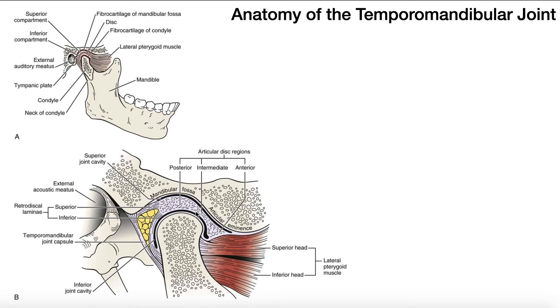The mandibular condyle likes to maintain contact somewhere in that intermediate region of the disc. And so if the disc moves, the mandibular condyle will follow suit. Because it likes to maintain contact really at the region between the posterior and anterior parts. So in the intermediate part.